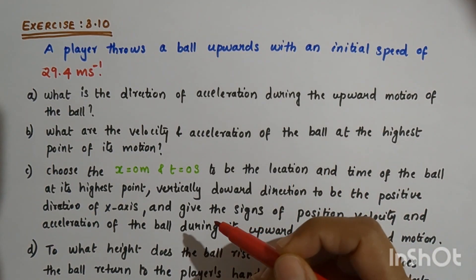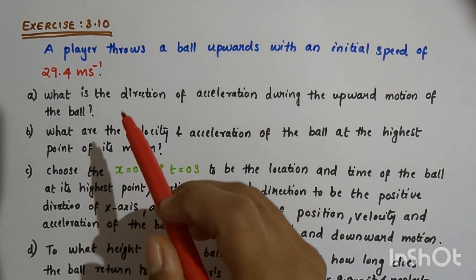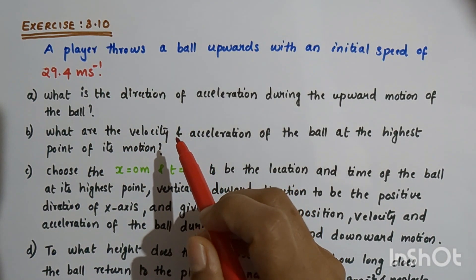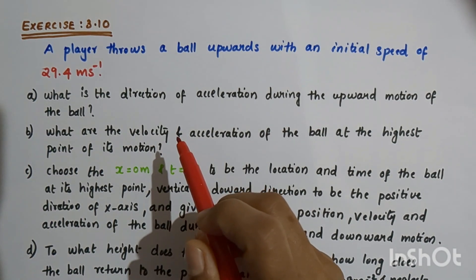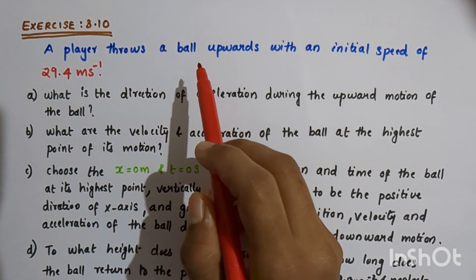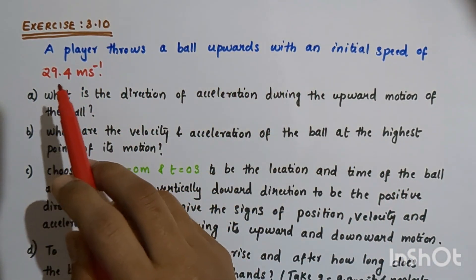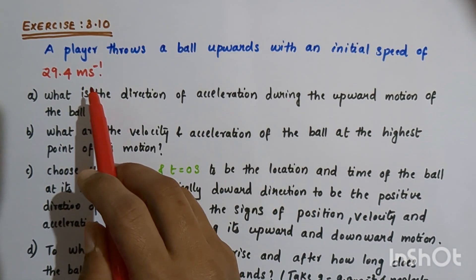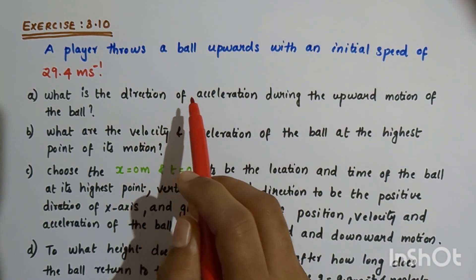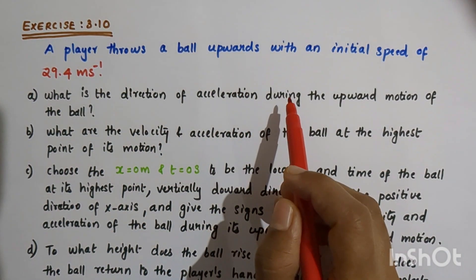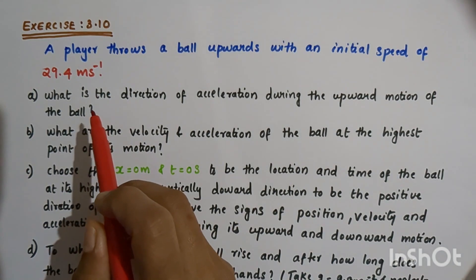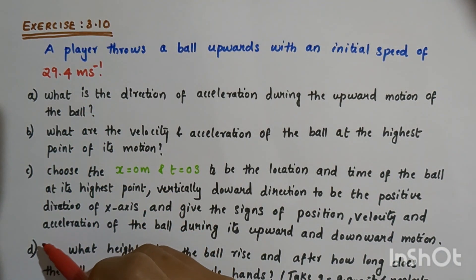Hello everyone. In this video we are going to discuss exercise 3.10 from the chapter motion in a straight line of class 11 physics. The question is: a player throws a ball upwards with an initial speed of 29.4 meters per second. We will discuss parts A, B, C, and D.